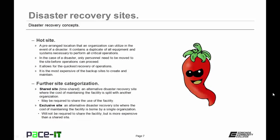So let's talk about the hot site. It's a pre-arranged location that an organization can utilize in the event of a disaster. It contains a duplicate of all equipment and systems necessary to perform all critical operations. In the case of a disaster, only personnel need to be moved to the site before operations can proceed. It allows for the quickest recovery of operations, but it's the most expensive of the backup sites to create and maintain.